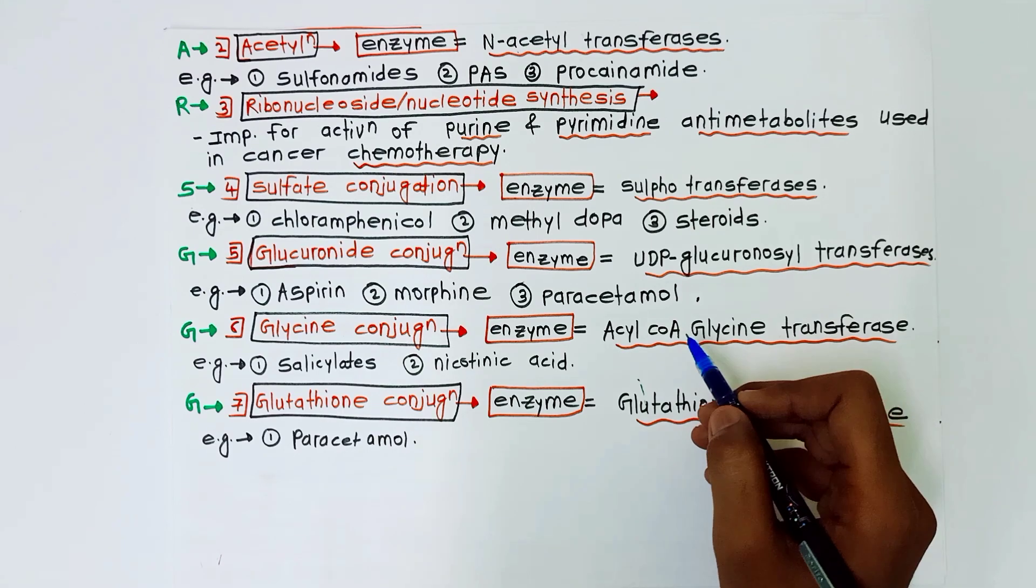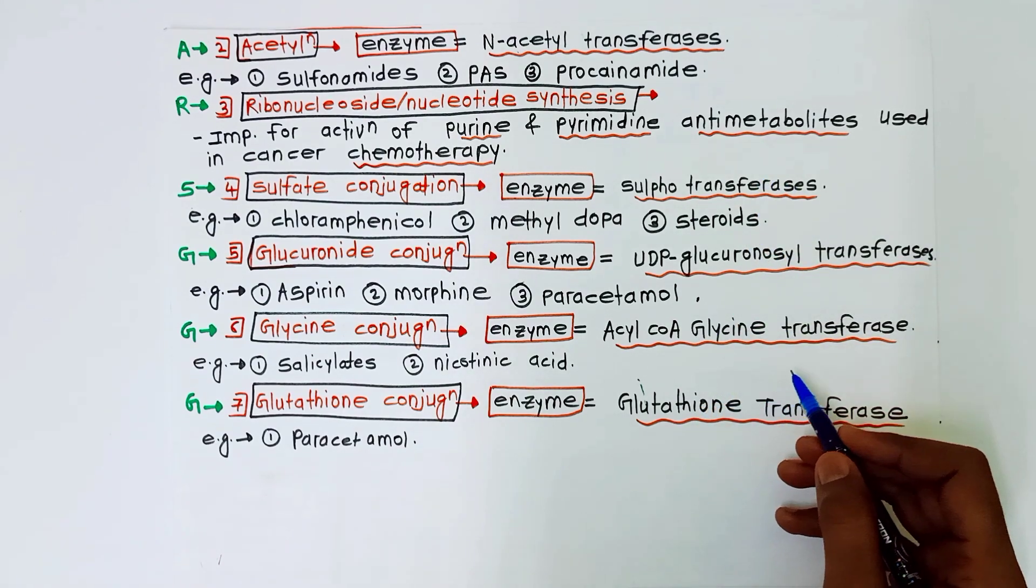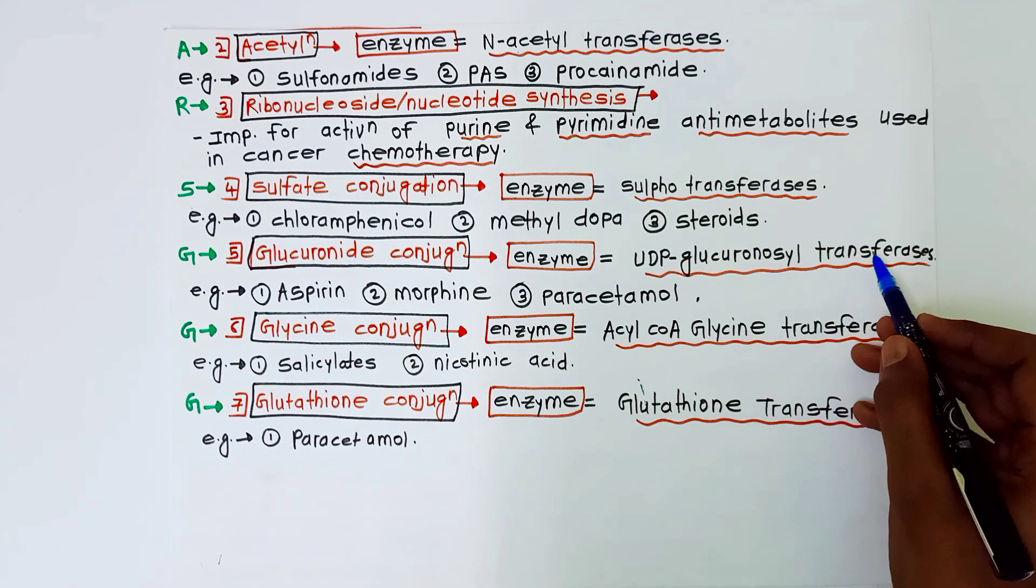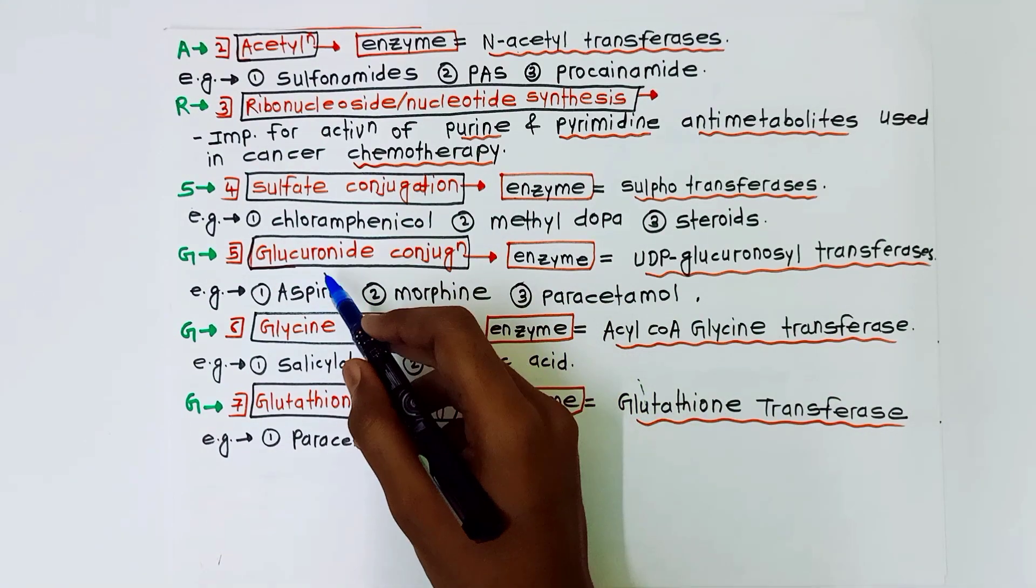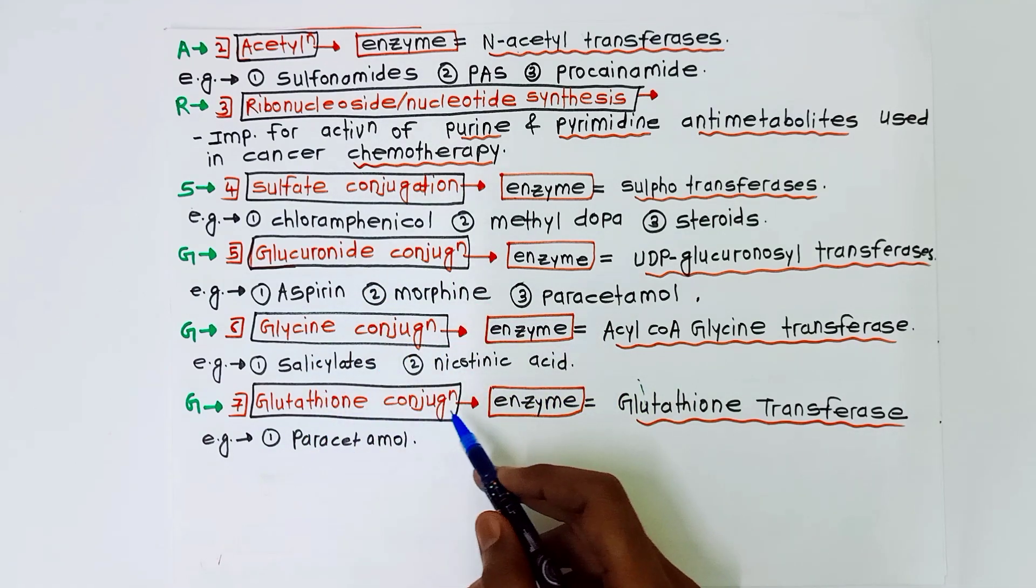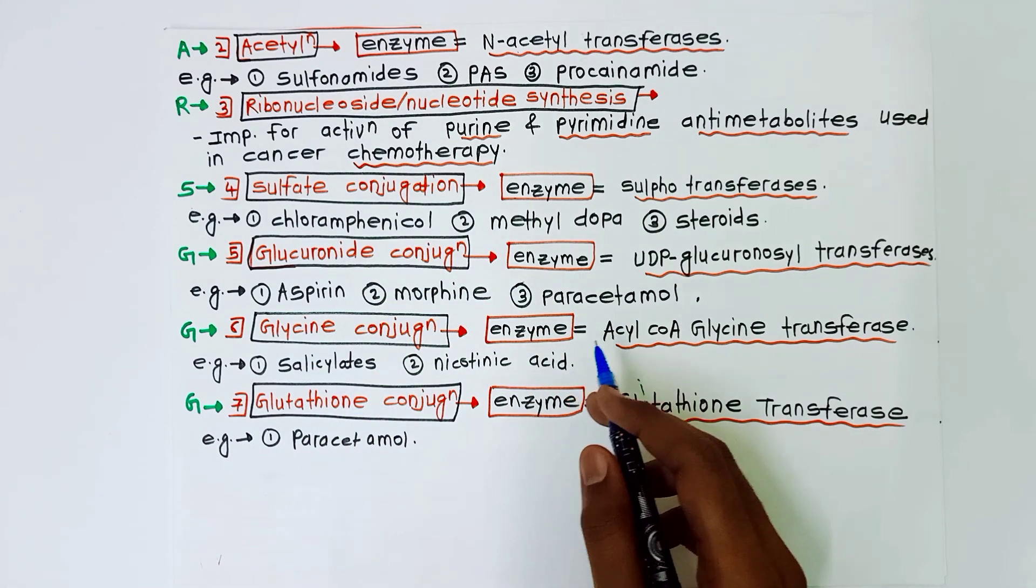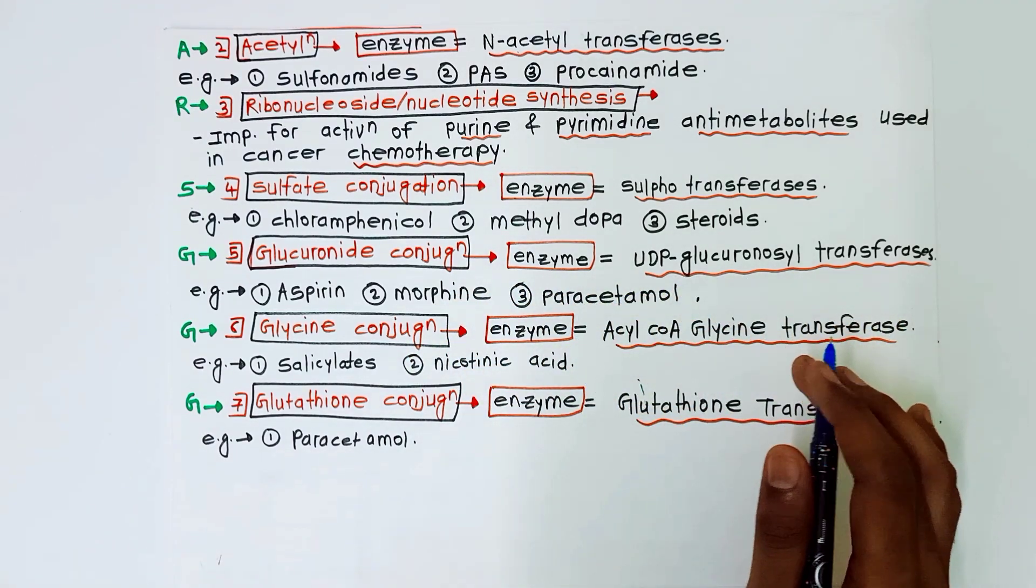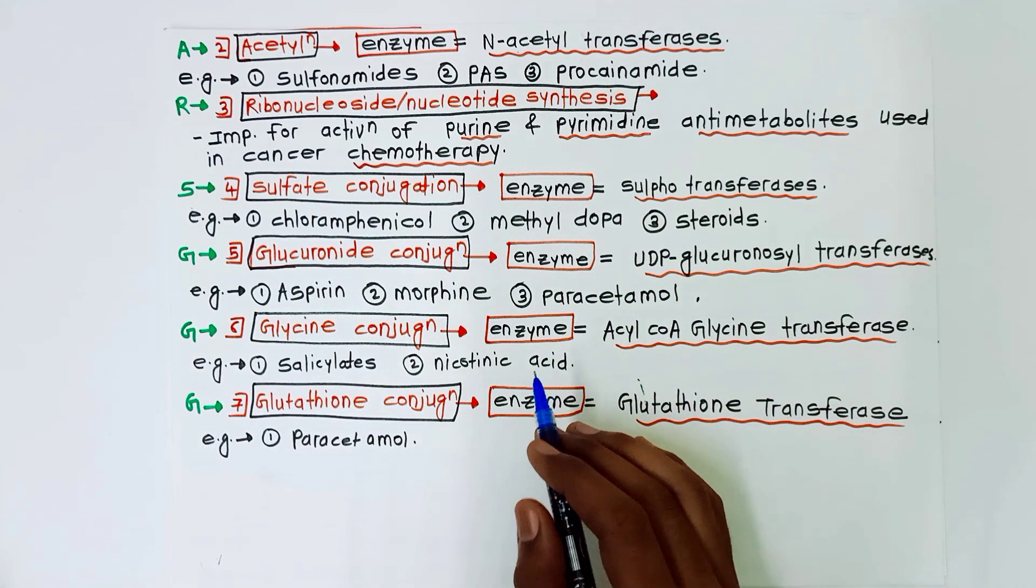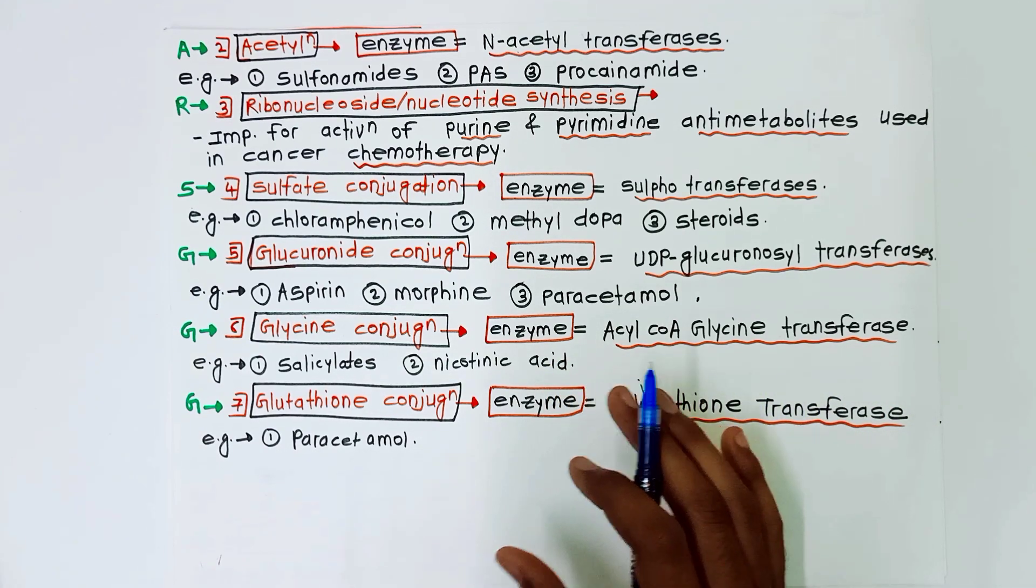How do we remember these enzymes? Enzymes are very easy to remember - they are all transferases. And these conjugations are very easy: glucuronide, glycine conjugation, and glutathione conjugation. So I have covered all these topics in this short video. Thank you for watching. If you like this video, do subscribe to my channel and share this video to your friends.